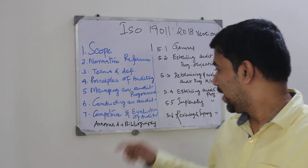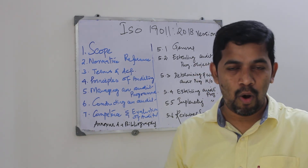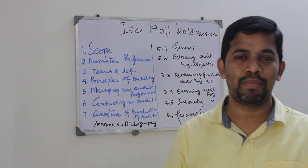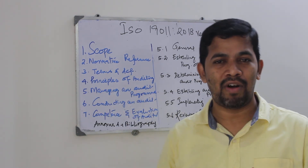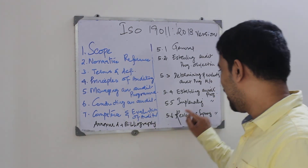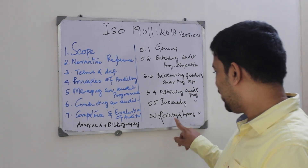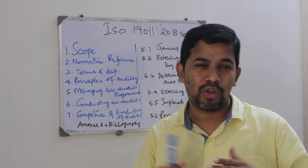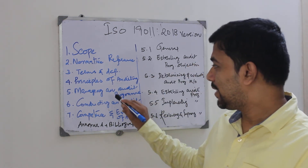Then clause 5.5 is implementing the audit program — that means you are executing the plans: conducting the opening meeting, scheduling meetings, and going through the audit program. This has been linked to the previous clause on the principles of auditing, which talks about integrity and professionalism. And the final sub-clause is 5.6 — reviewing and improving the audit program. You keep improving the plans and the audit program continuously. So this is what clause number five is all about.